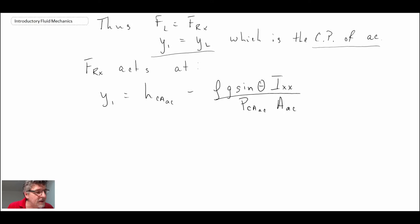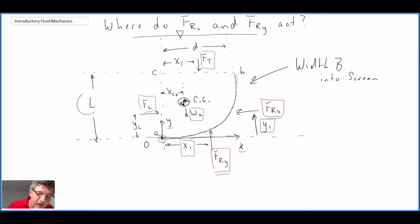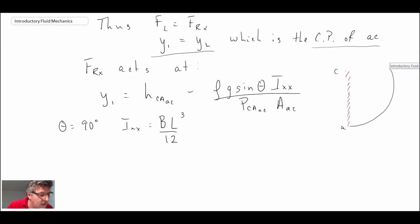We get that expression. Now what we can do is determine IXX theta and AAC. AAC if you recall is this surface here, we have A to C, so what we're talking about is this surface right here. Theta for that is equal to 90 degrees. IXX is BL cubed divided by 12, using the dimensions that we have from our schematic - we have L being that dimension, we set its width B into the screen, and finally the area of AC is just B times L. We can plug them into the equation and with that we get Y1.